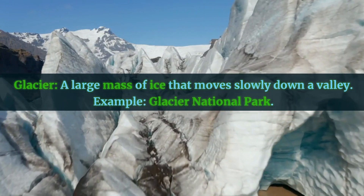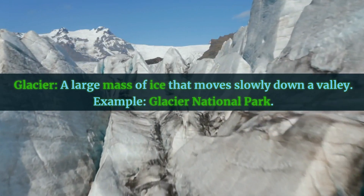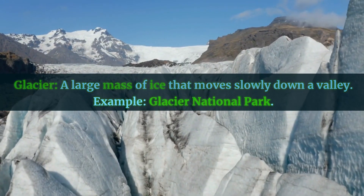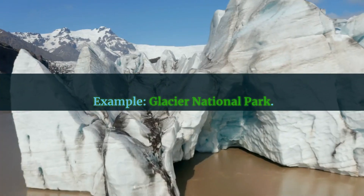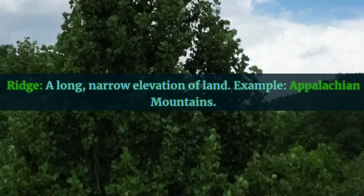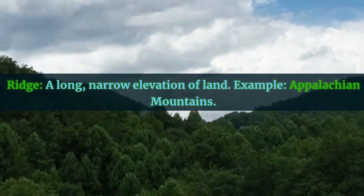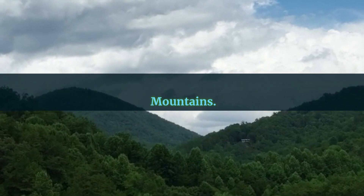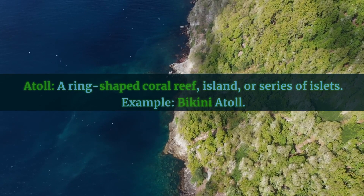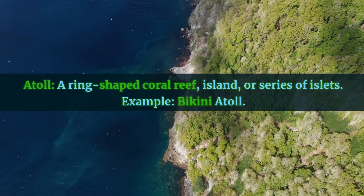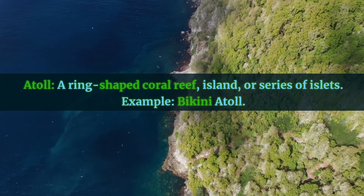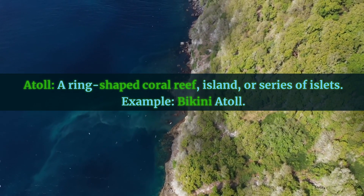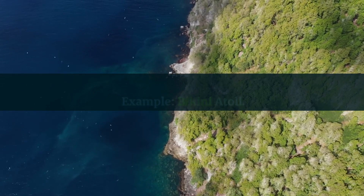Glacier: a large mass of ice that moves slowly down a valley. Example: Glacier National Park. Ridge: a long, narrow elevation of land. Example: Appalachian Mountains. Atoll: a ring-shaped coral reef, island, or series of islets. Example: Bikini Atoll.